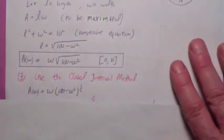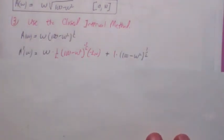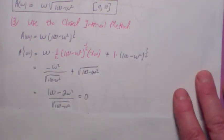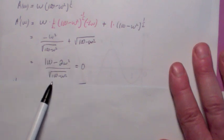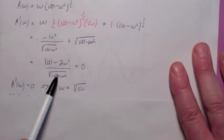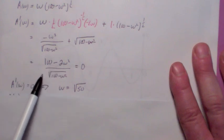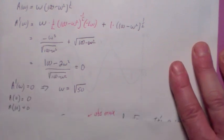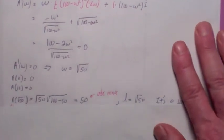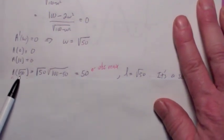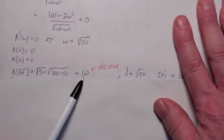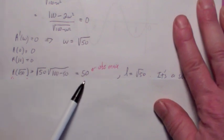So we take the derivative, which is kind of a pain, set it equal to 0. We're going to have to get the common denominator here, which is √(100 - W²). Notice this is 0 precisely when the numerator is 0. So if you set the numerator equal to 0, divide by 2, and take the square root, W = √50. If you use the closed interval method on this, all you have to do is compare A of 0 with A of 10 with A of √50.